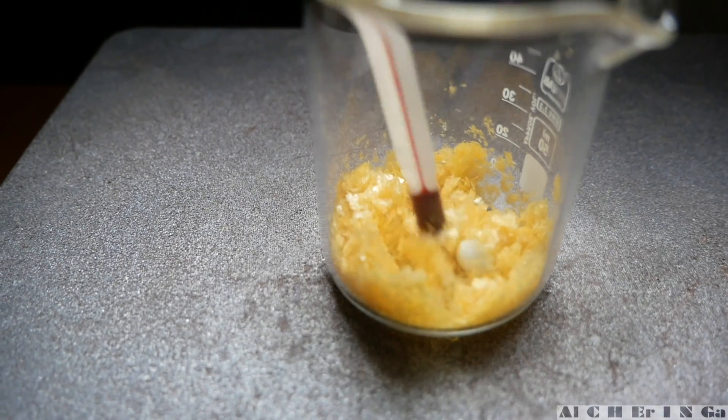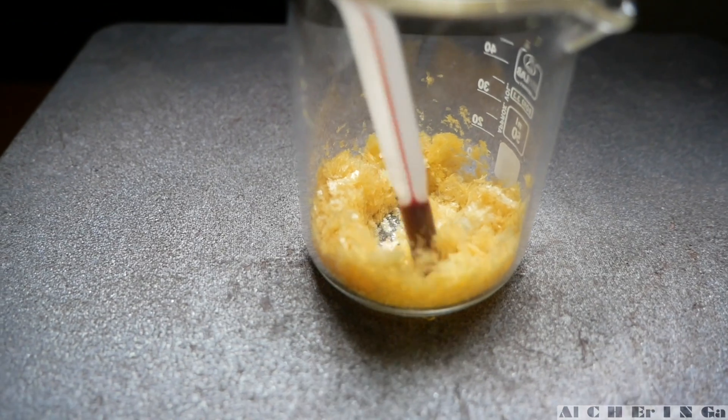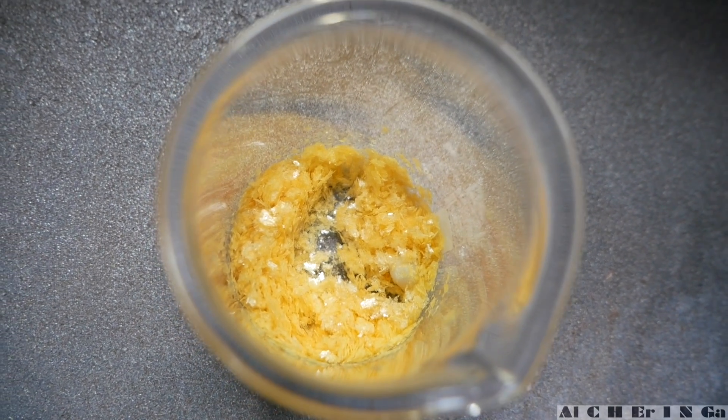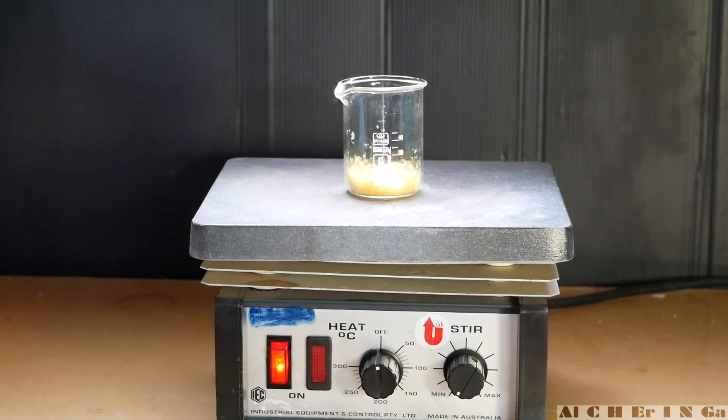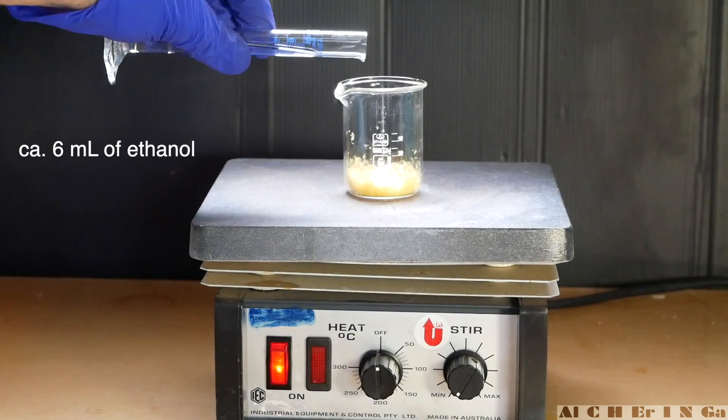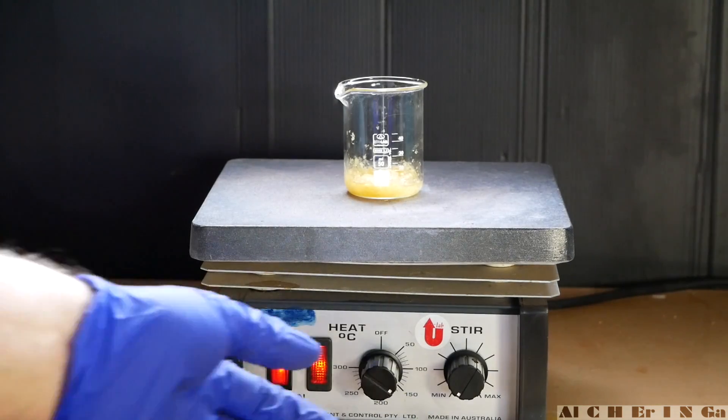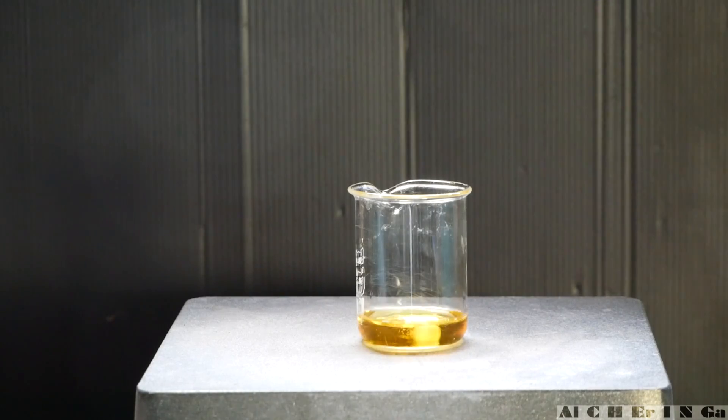Now we need to carry out recrystallization in boiling ethanol. Add the crude crystals into a beaker. Place the beaker onto a hot plate and add around 6 milliliters of ethanol. Make sure to add in a stir bar as well. Turn the hot plate and stirring on.